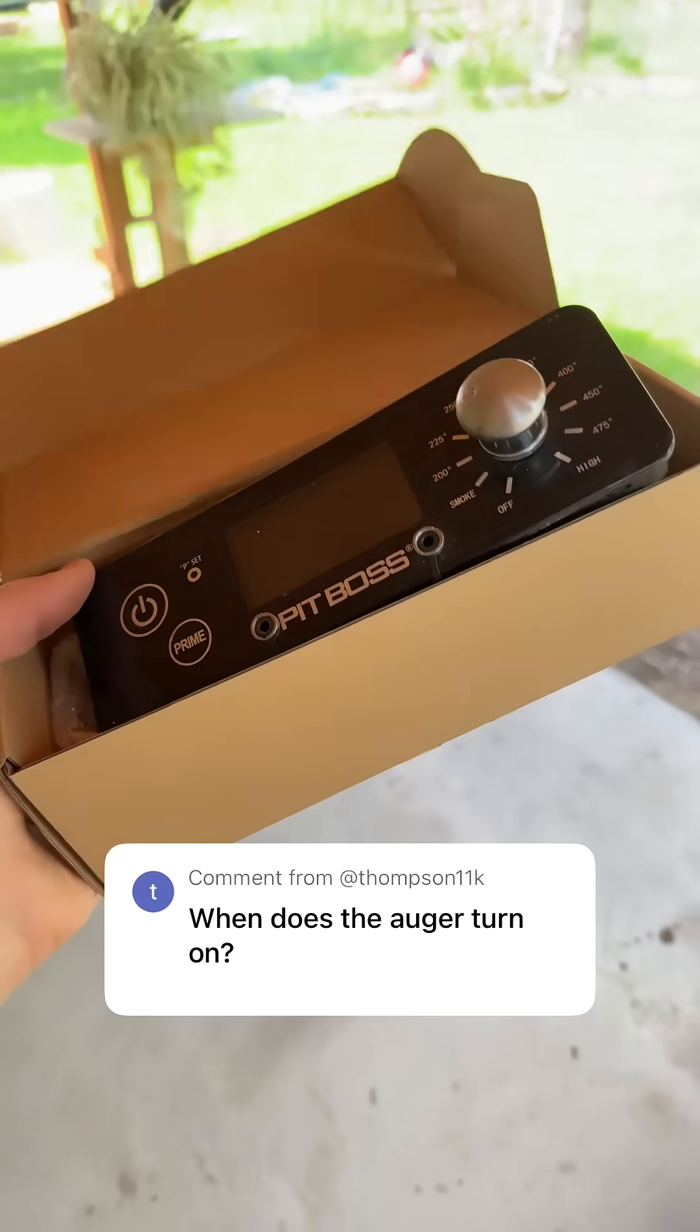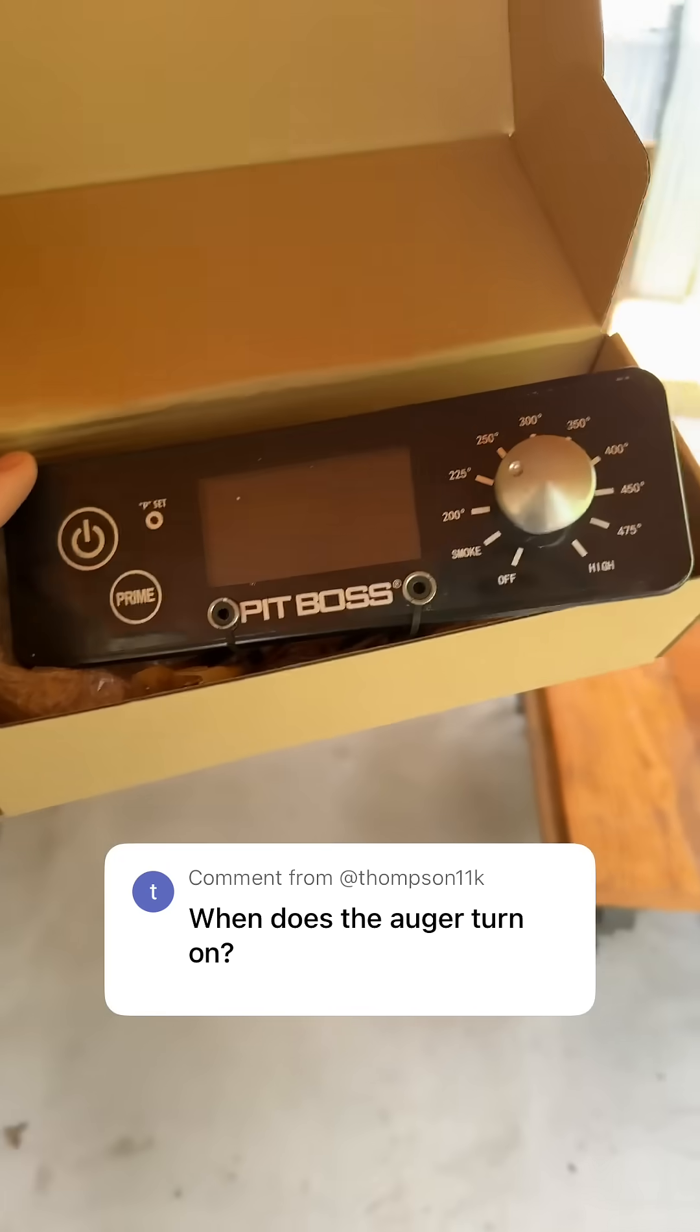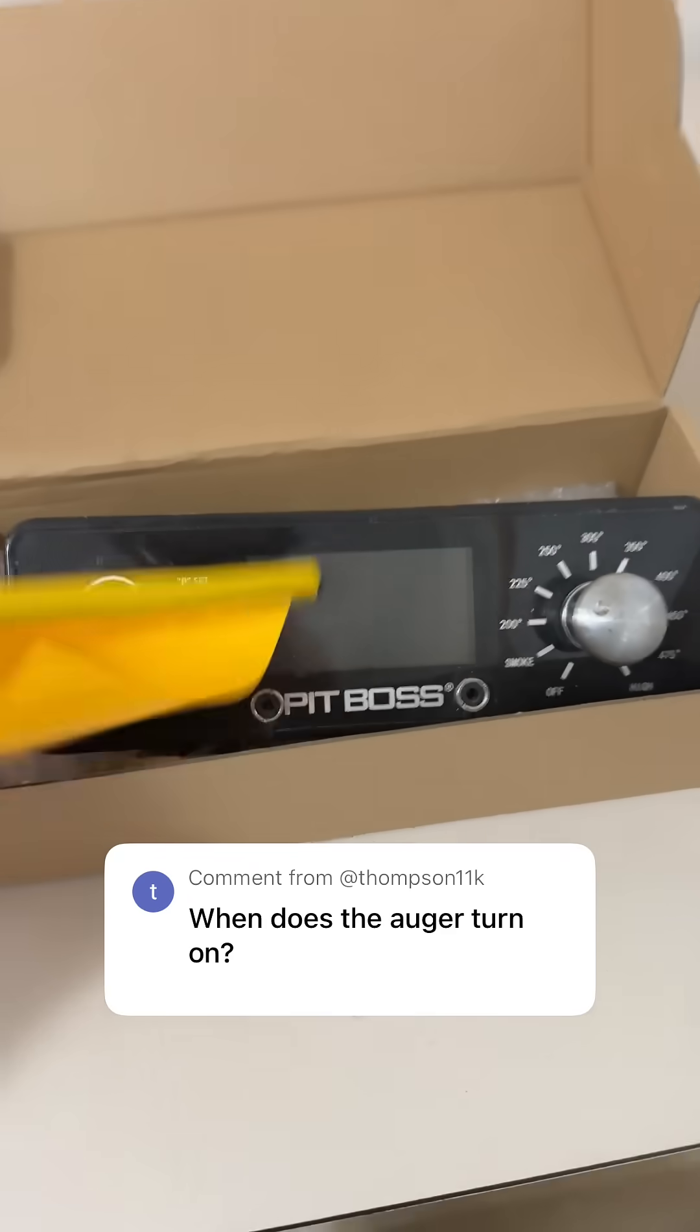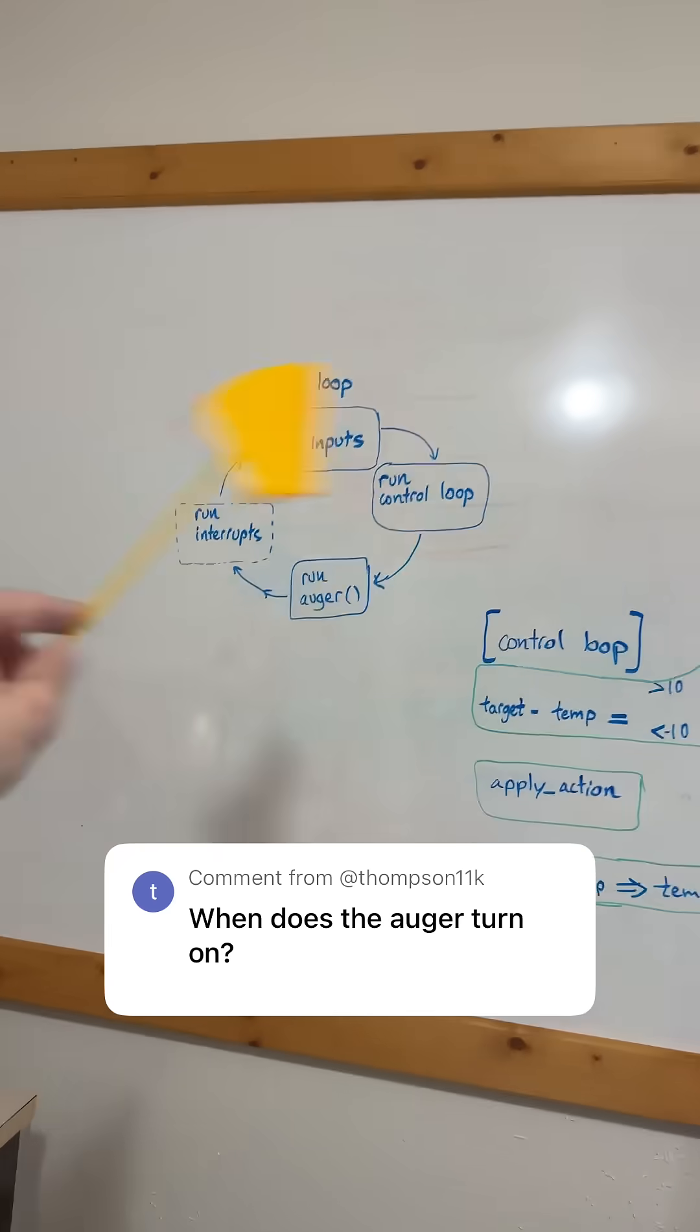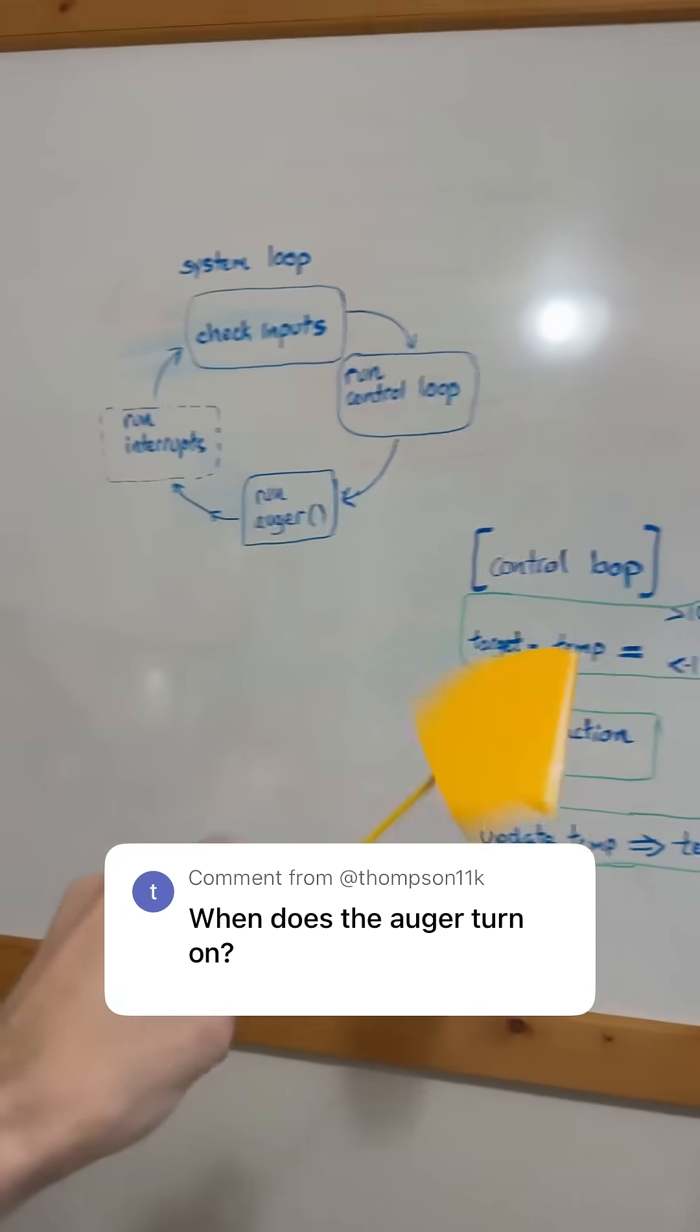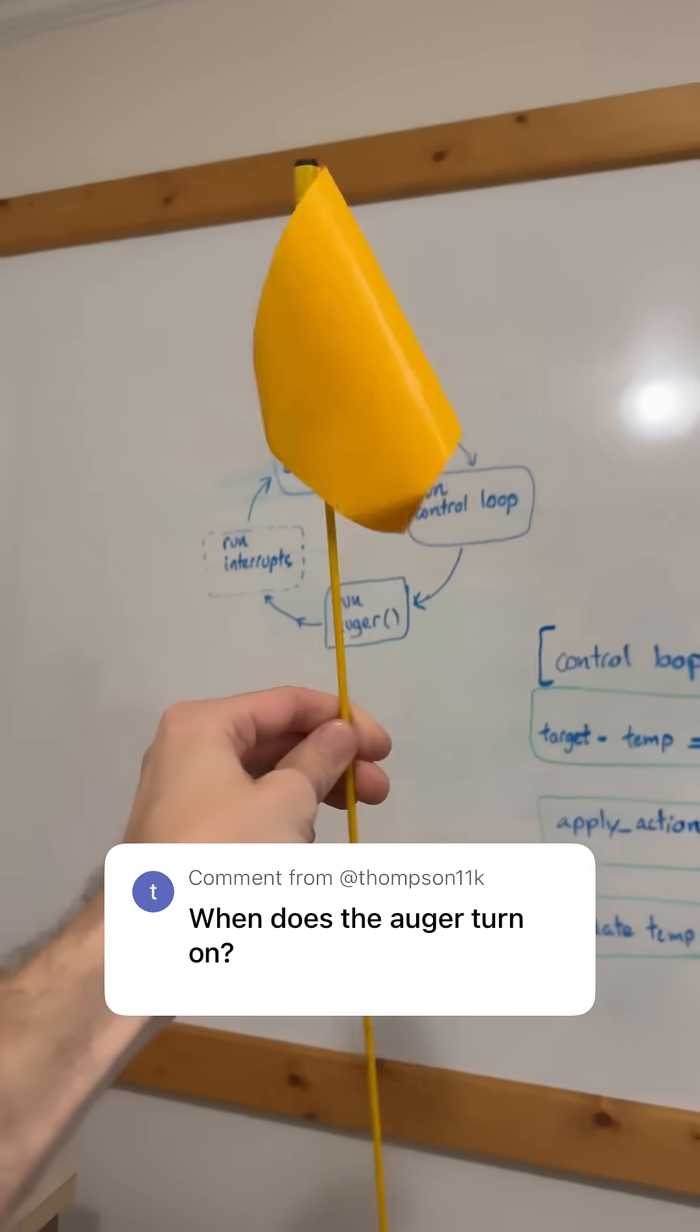So let's bring this old controller inside, and I'll show you when the auger turns on. The firmware on this machine is running a control loop, and the control loop is in software, in the firmware actually, and the auger turns on when the flag goes up.